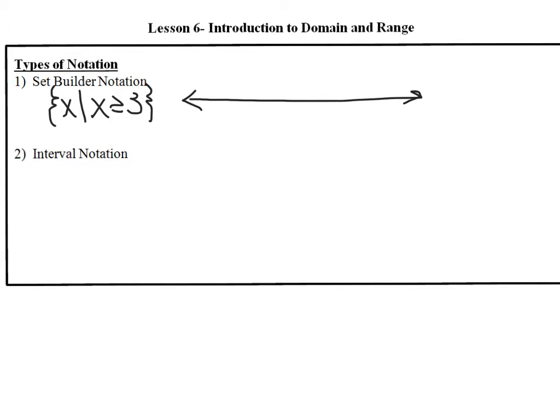I see that 3 is an anchor point for this number line. Sometimes I like to start at 0 as long as my anchor point is close enough to my 0 point, so I'm going to put 3 on there. The numbers we want to shade are all numbers greater than or equal to 3, so 3 is included in the set. I'm going to put an open circle at 3 but fill it in showing that 3 is part of my set, then shade to the right showing all numbers greater than or equal to 3.